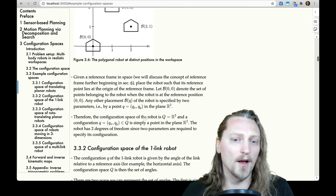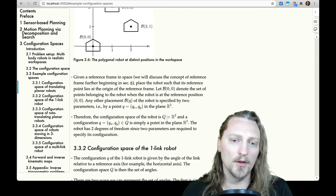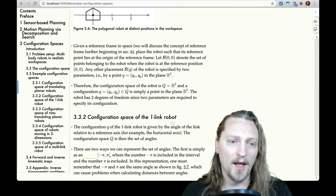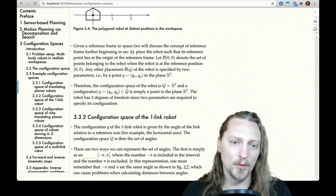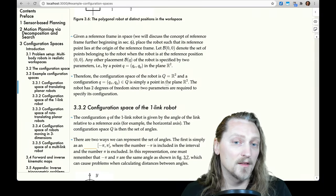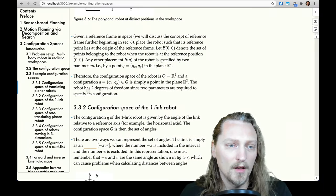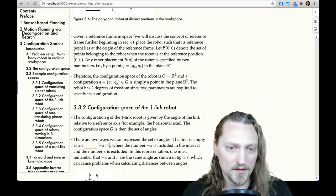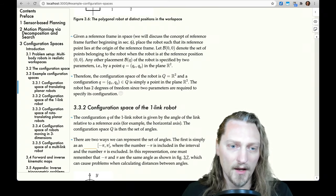Therefore, the configuration space of the robot is Q equals R^2, and a configuration Q = (Qx, Qy) in the configuration space is simply a point in the plane R^2. The robot has two degrees of freedom, since two parameters are required to specify its configuration.